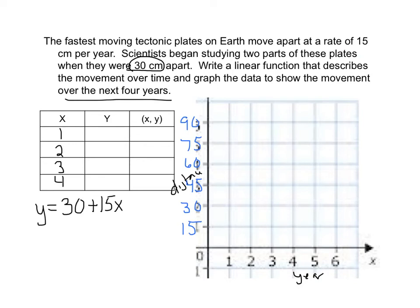So when I do my output now, after one year, they're an additional 15 centimeters apart. So instead of being 30, they're now 45. So our first ordered pair is 1, 45. After two years, it's going to be 60 centimeters apart. So it would be 2, 60. After three, they're going to be 75. And after four years, they're going to be 90 inches apart already.